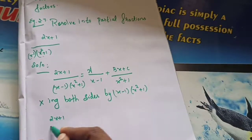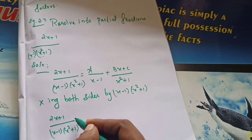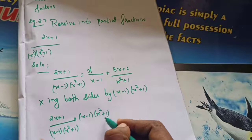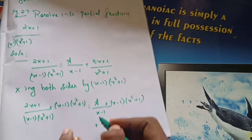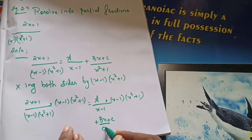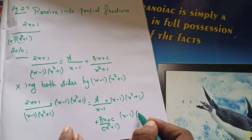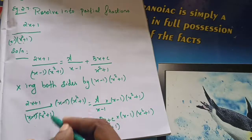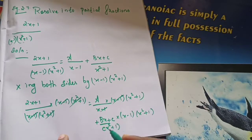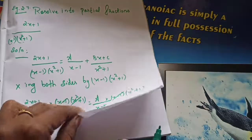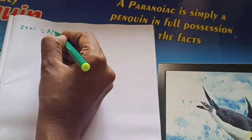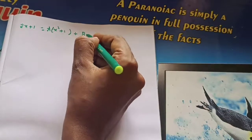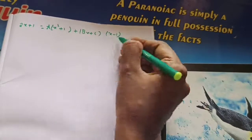Multiplying: 2x plus 1 divided by x minus 1 into x squared plus 1, times x minus 1 into x squared plus 1, equals A by x minus 1 times x minus 1 times x squared plus 1, plus bx plus c divided by x squared plus 1 times x minus 1 times x squared plus 1. The terms x minus 1 and x squared plus 1 cancel on each side, leaving: 2x plus 1 is equal to A into x squared plus 1 plus bx plus c into x minus 1. Take this as equation number 2.